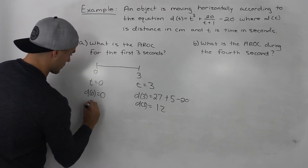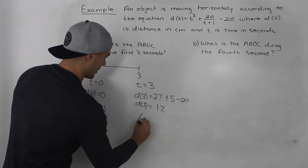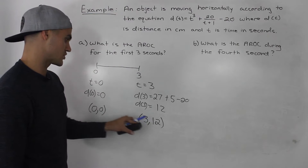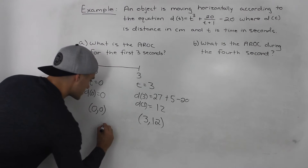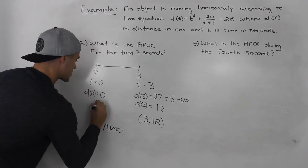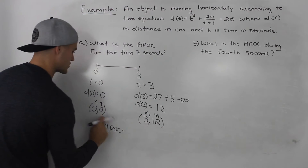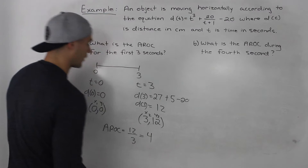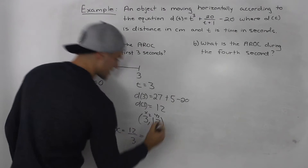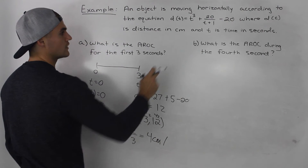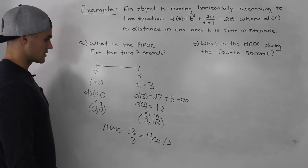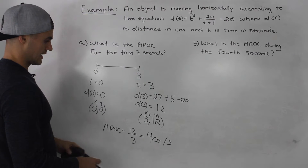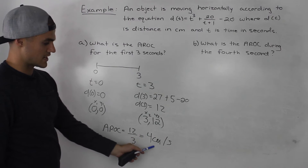So the coordinates we're dealing with are (0, 0) and (3, 12). To find the average rate of change, we find the slope of the secant line between these points. Labeling (x1, y1) and (x2, y2), it's (12 - 0) / (3 - 0) = 4. The units are centimeters per second, so the object moves on average at 4 centimeters per second for the first 3 seconds.